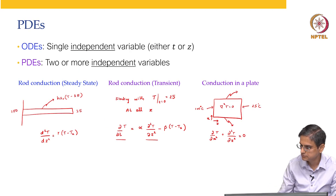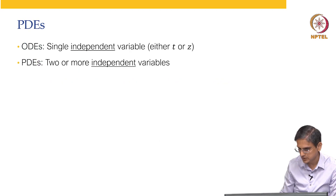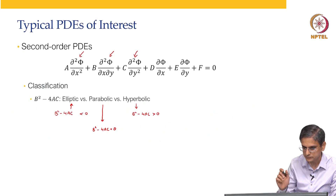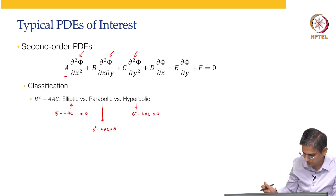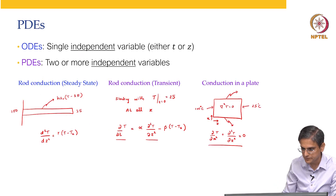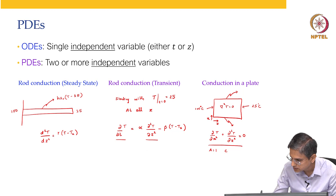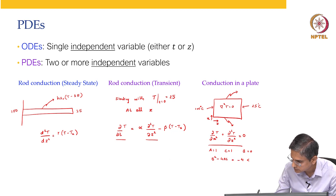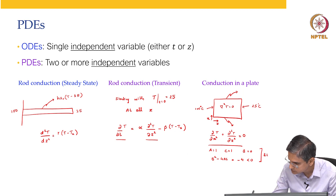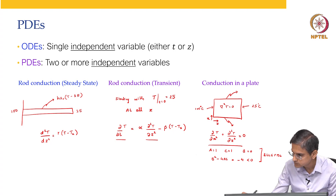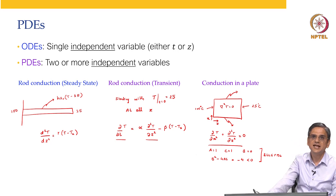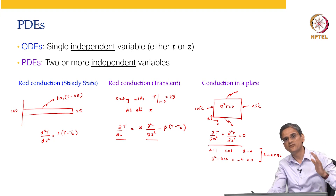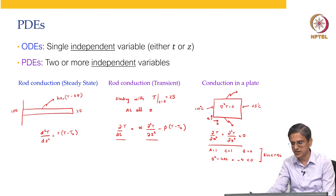For example, in the Laplace problem we had: a = 1, c = 1, and b = 0. So b² minus 4ac = 0 minus 4 = negative, making it elliptic. In other words, elliptic problems are problems where you have boundary value problems in both x and y directions. Those are the type of elliptic problems.